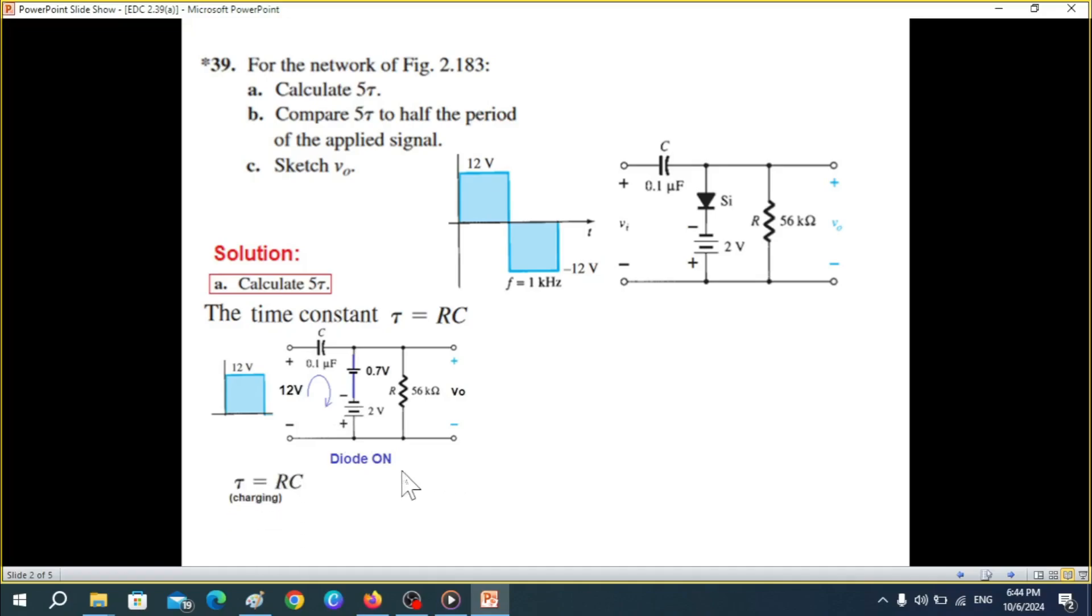And so now R in this case will not be this R, rather the resistance of the diode. And resistance of the diode is very minor, very small, and it can be neglected. It could be considered to be 0, and so τ will be 0 second, and 5τ obviously will be 5 multiplied by 0, so 0 millisecond.